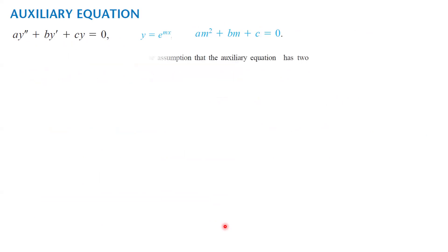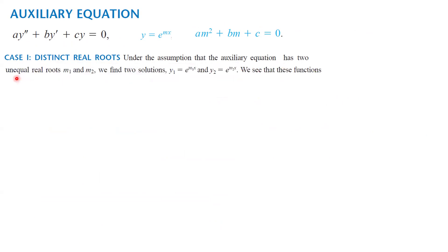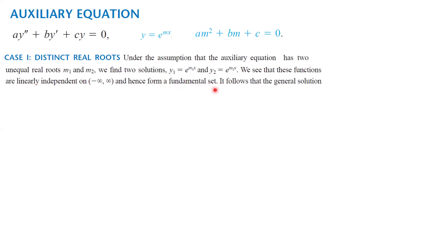Let us summarize. In Case 1, when the auxiliary equation has two unequal real solutions m₁ and m₂, the two solutions are e^(m₁x) and e^(m₂x). These functions are independent and form a fundamental set, so the general solution is y = c₁e^(m₁x) + c₂e^(m₂x).